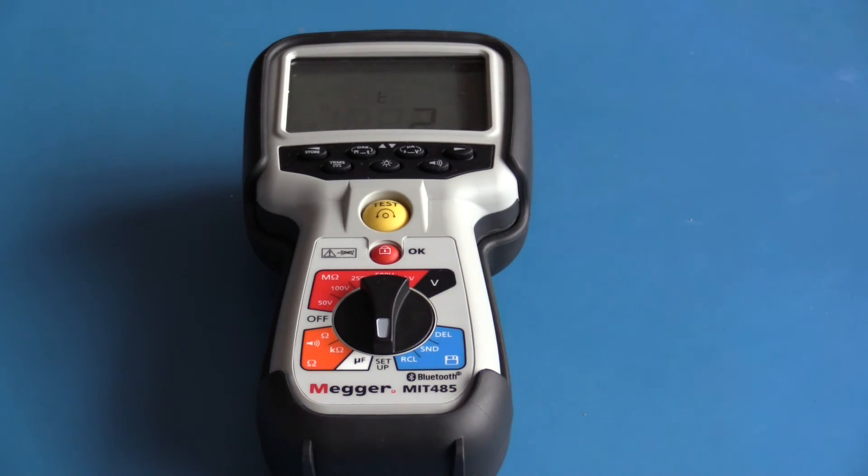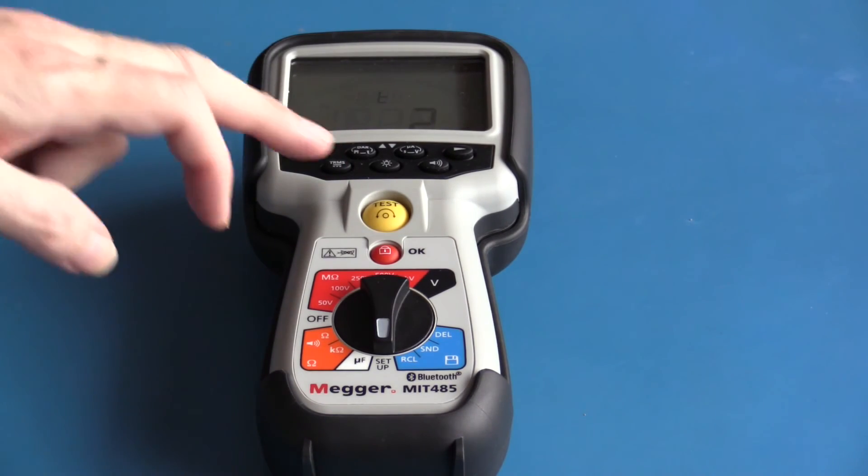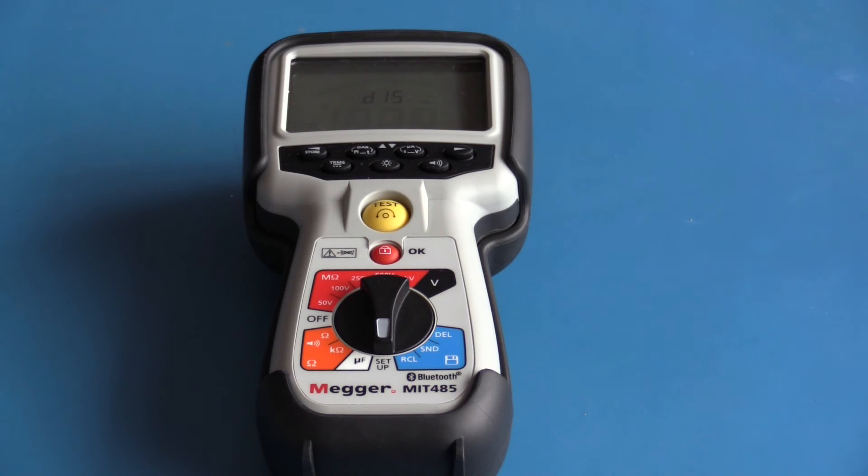For the automated test, this is the number of minutes that it will run. These are the distance units used when using the capacitance function to estimate the cable length. It can be set to metric meters or imperial feet. This function sets the measurement capacitance per meter. And finally, we have our Bluetooth setup.